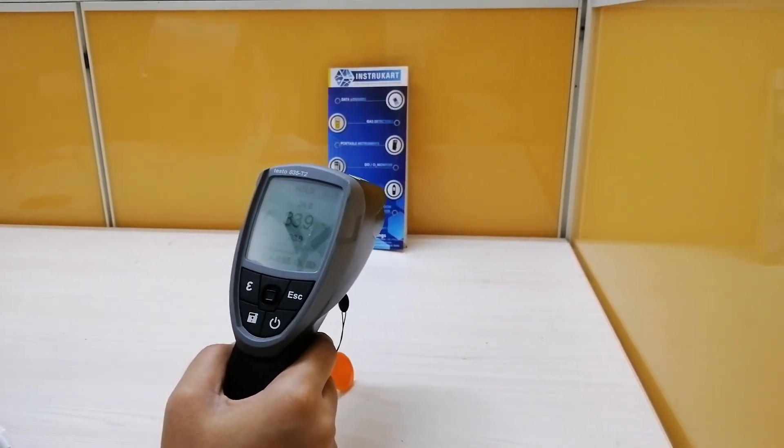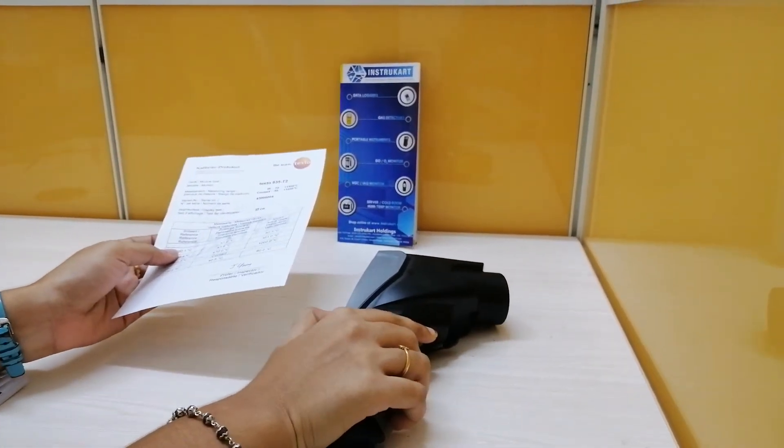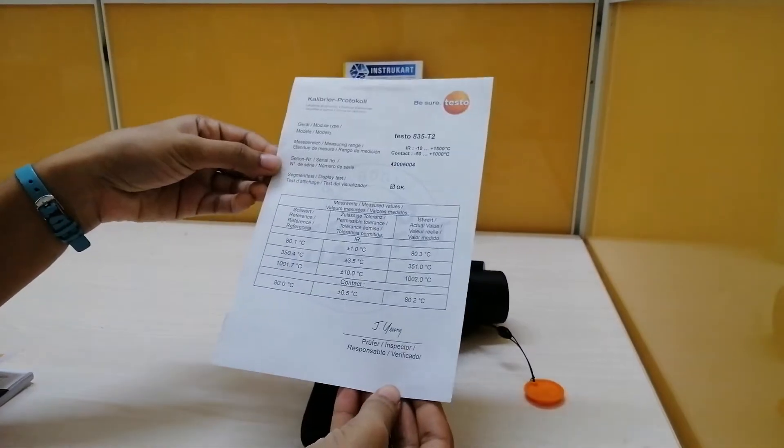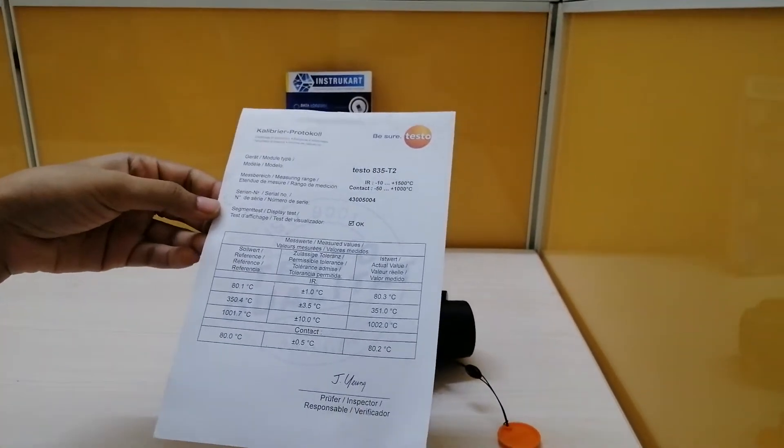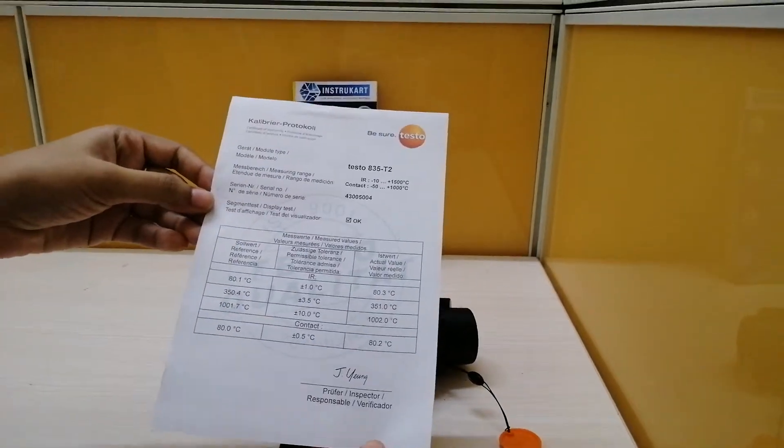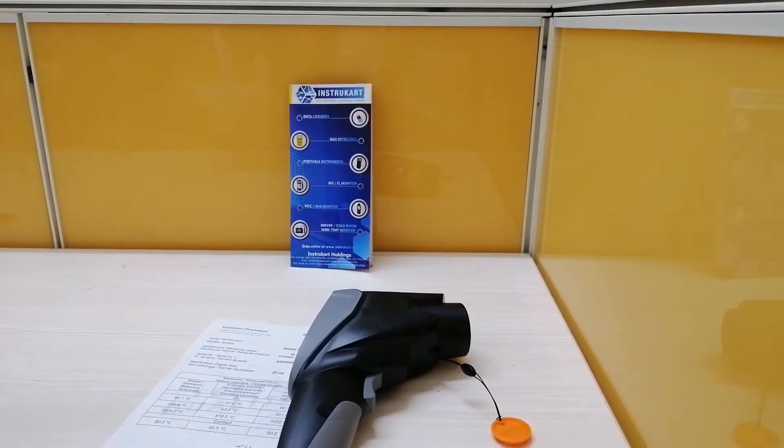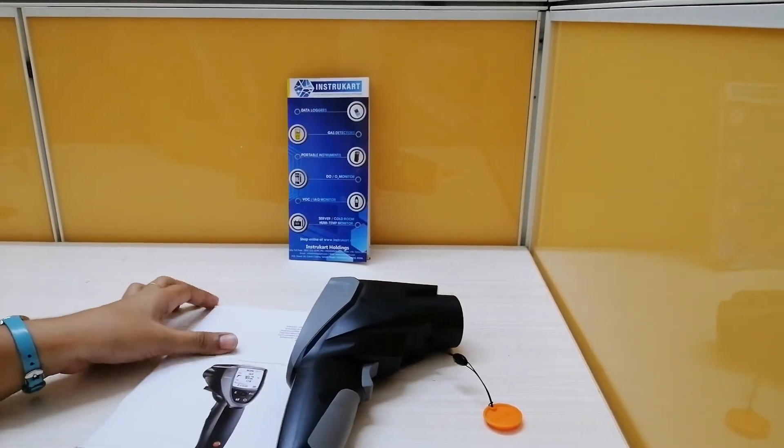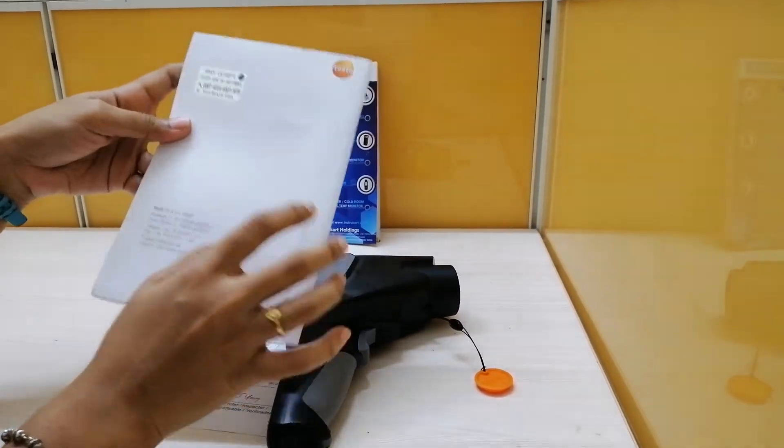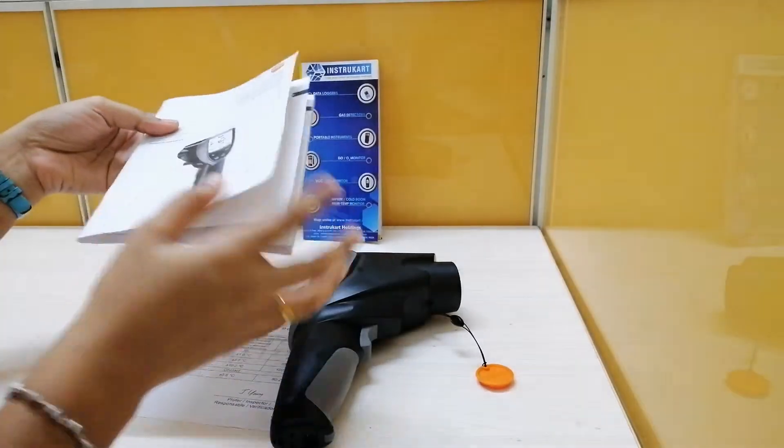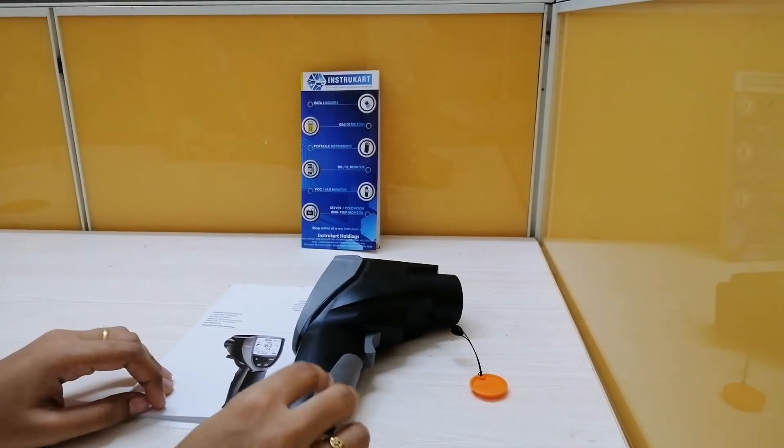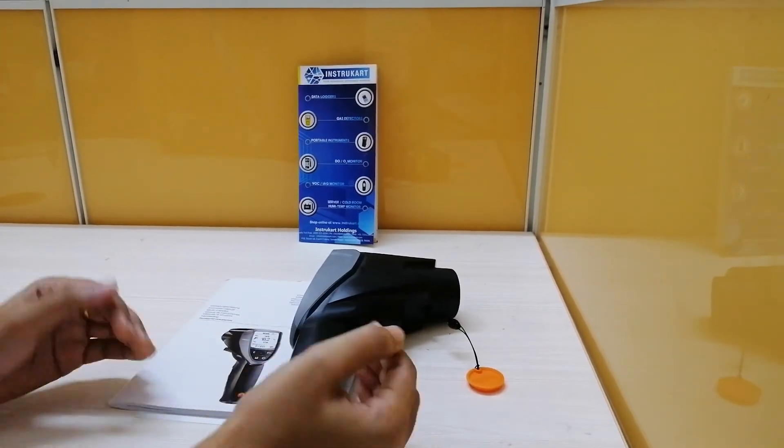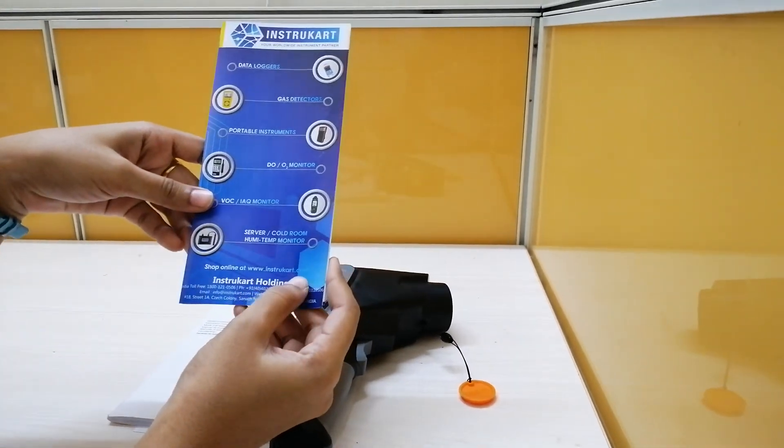A long press will turn off the device. These are the accessories: calibration certificate from the manufacturer Testo, and an instruction manual. You can also download data using software downloadable from the Testo site using this cable to access the software. This is about the Testo 835 T2 Infrared Thermometer. If you want to know more about this product or similar products, please visit www.intracot.com. Thanks for watching.